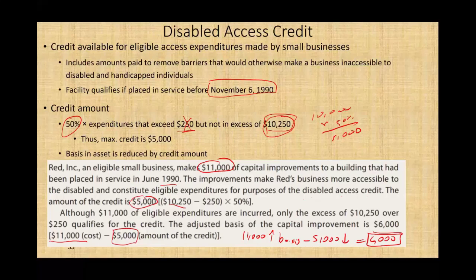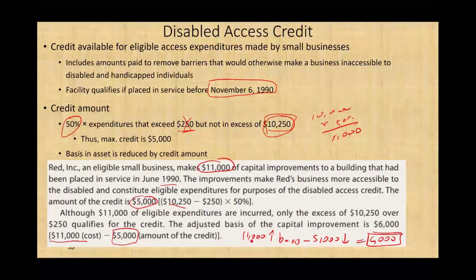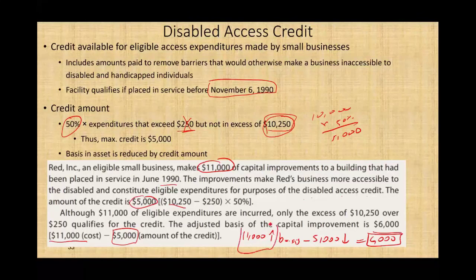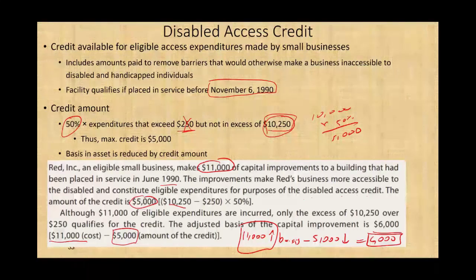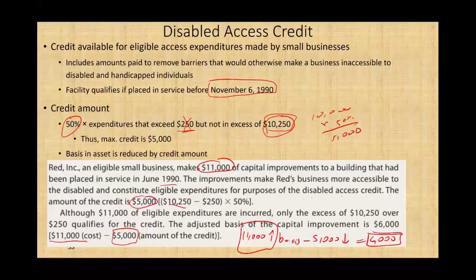If you incurred the expenditure without the credit, your basis would go up by $11,000. But since you get the credit, we bring it down. Simply put, you cannot have the credit and also experience lower gain when you sell the property or claim more losses. You cannot have it both ways — you get the credit and lower your basis by the amount of the credit.